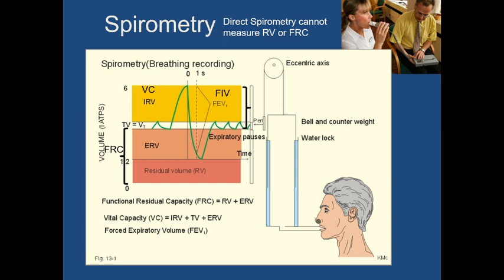These are the things I expect you to remember: what FRC is and how to define it, what residual lung volume is, what vital capacity and forced vital capacity are and how we measure them, what FEV1 is, what functional inspiratory volume is, and why the FEV1 is important. We can measure almost everything on the spirogram except residual lung volume — that is very difficult to measure and impossible to do accurately with spirometry alone.